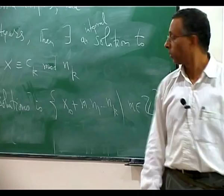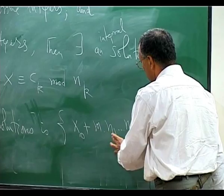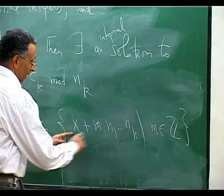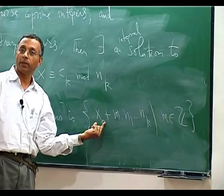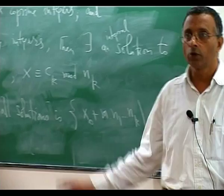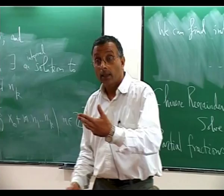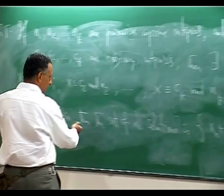Observe that everything of the form x₀ + m·N1·...·Nk is a solution, because if x₀ satisfies each congruence and we add a multiple of N1·...·Nk, each Ni divides that multiple so the remainder is unchanged. The claim is that those are the only solutions — there is no other possible solution. One can state this as: the solution is unique modulo N1·N2·...·Nk.